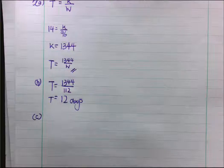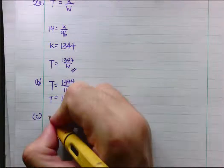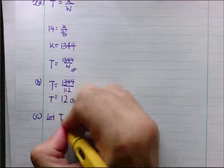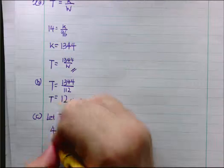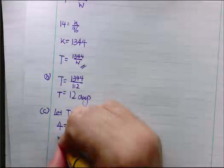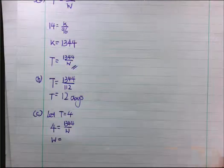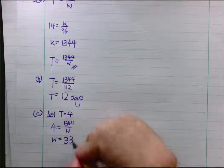5c. They say if you want to repair the ship in 4 days. So, now then let T equals 4. Let's say 4 equals 1,344 over W. Eventually, you solve for W. W is equal to 336.